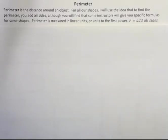We typically use a capital P when we talk about perimeter, and for my formula I'm just going to say add all sides.